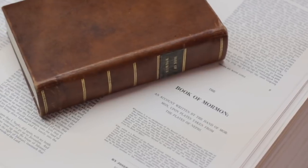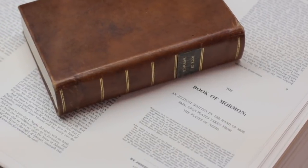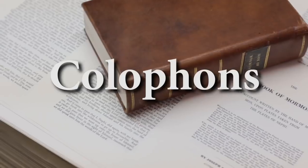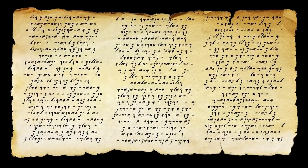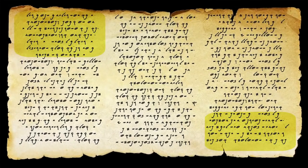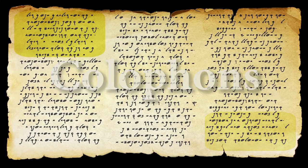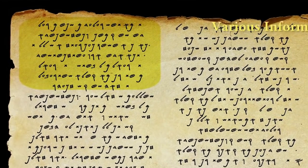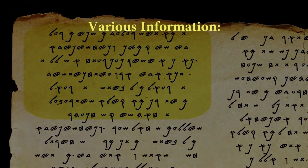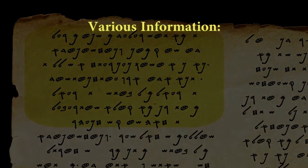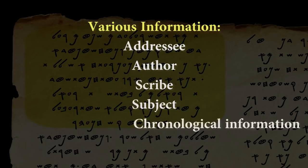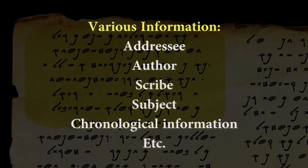Scholars have noticed that the Book of Mormon contains what are called colophons. One scholar explained that in antiquity the beginning and/or the end of a literary text was often marked by colophons. The colophon as superscriptions and subscriptions contained various information about the published text: addressee, author, scribe, subject, chronological information, etc.